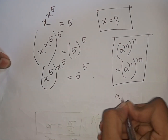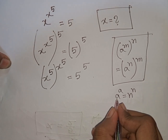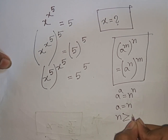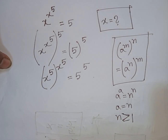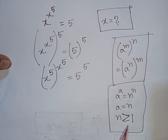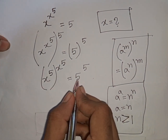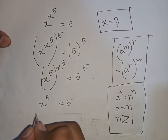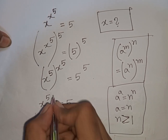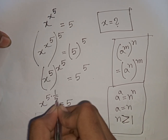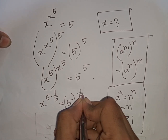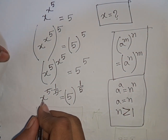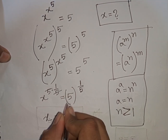Applying the rule that if a^a equals n^n then a equals n (for n greater than or equal to 1), we compare both sides: x^5 equals 5. To solve for x, we raise both sides to the power of 1/5, so the exponent 5 cancels. We get x equals 5 power (1/5).